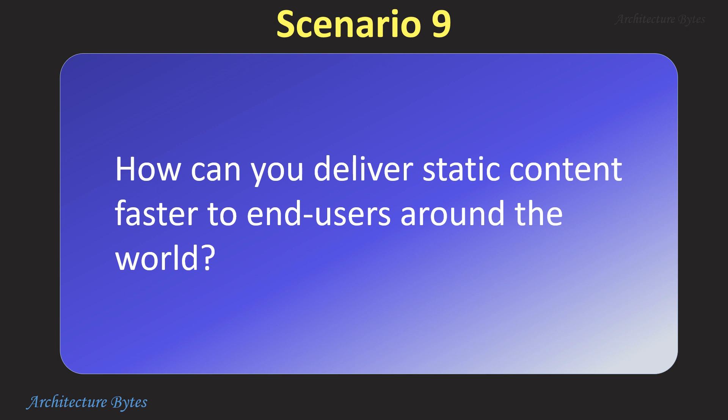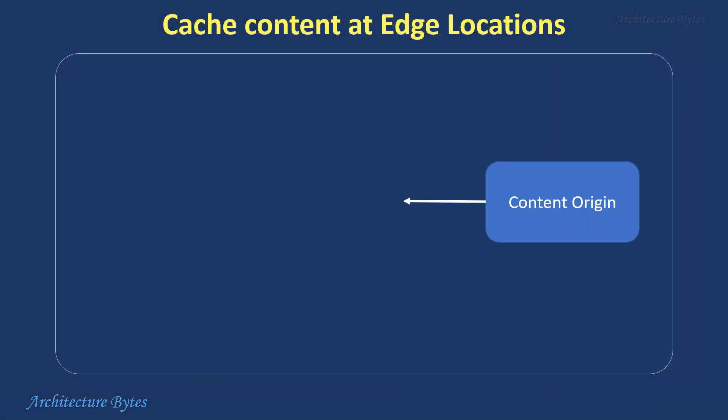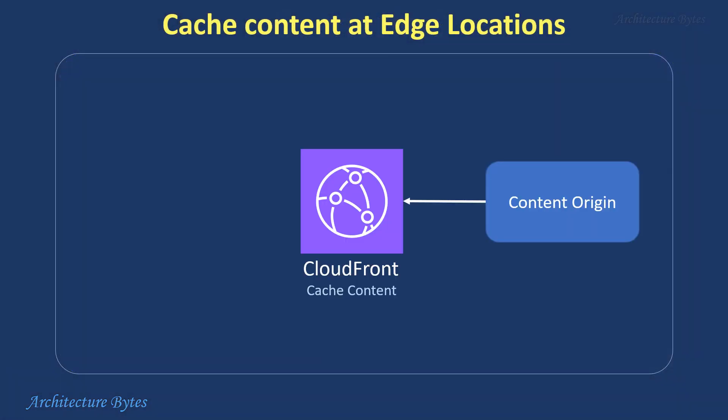How can you deliver static content faster to end users around the world? Using CloudFront, a content delivery network service, you can speed up delivery of your website and app content like images and videos by caching them in a global network of edge locations. Users then access the content from the closest edge location, reducing latency and improving load times.